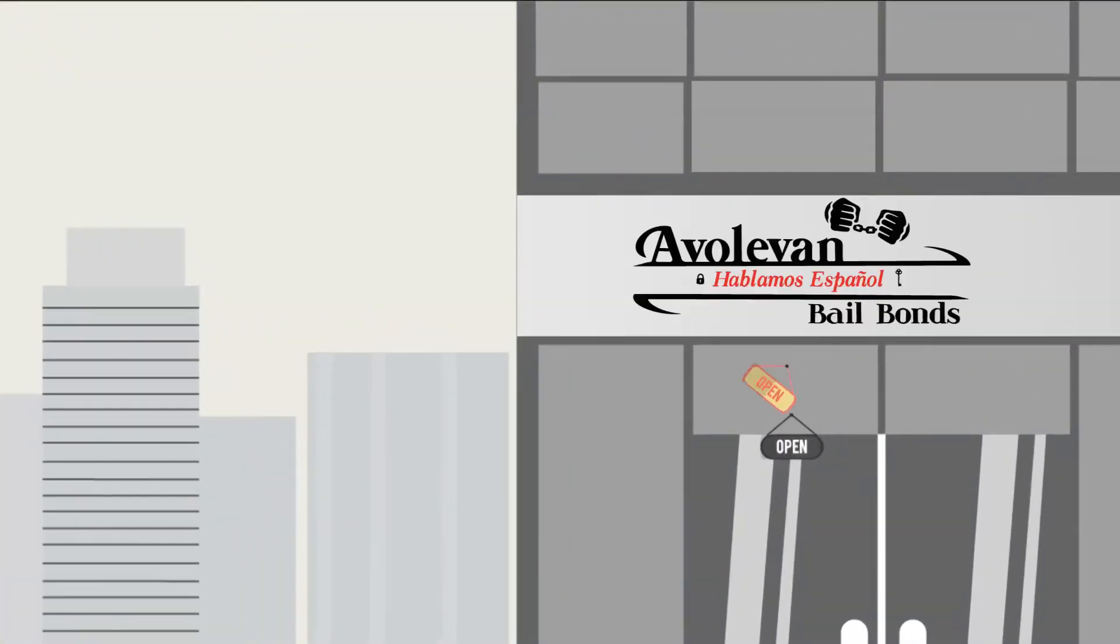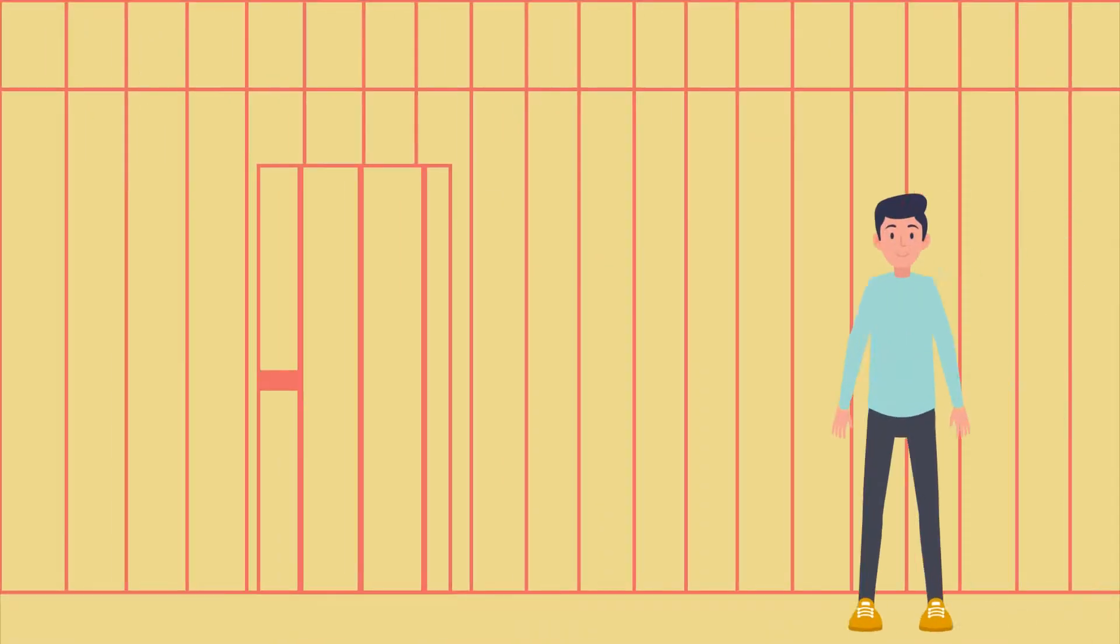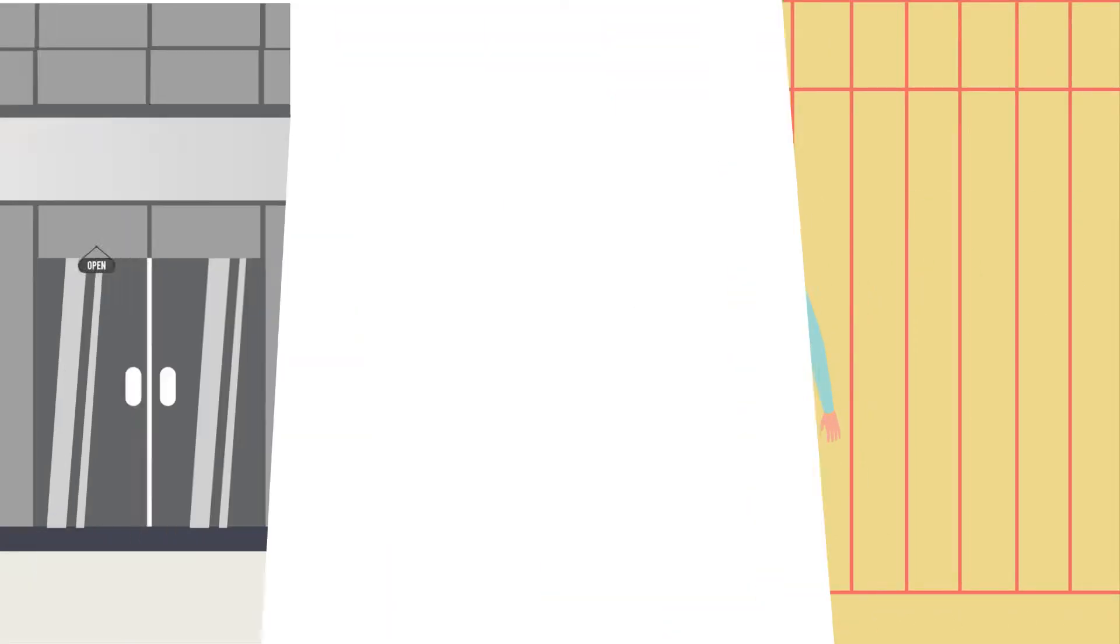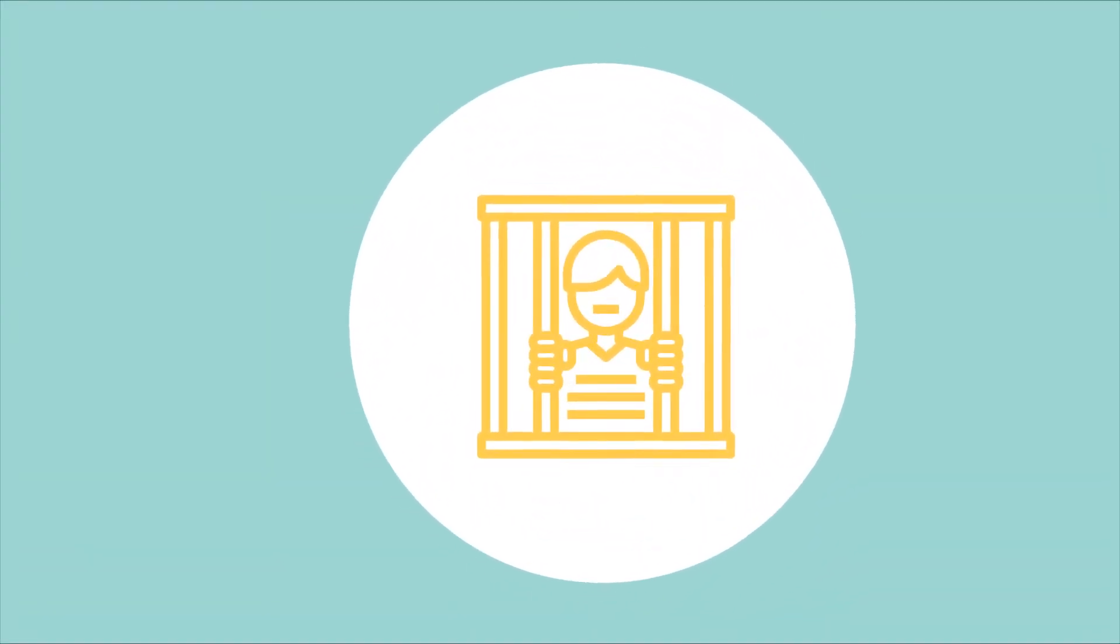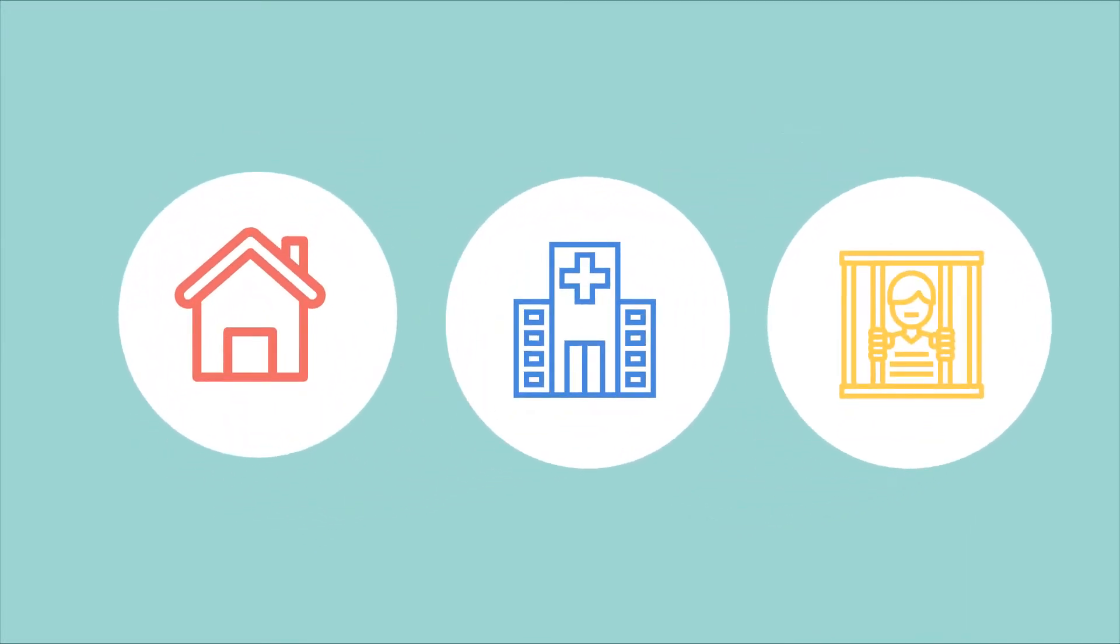Avolivan Bail Bonds is open 24 hours a day, 7 days a week. The quickest way to bail an individual out of jail is to meet with one of our professional bail agents at the facility where the inmate is held and where the bail bond is turned in, or at our main office. In some cases, we can come to your home if that is more convenient.